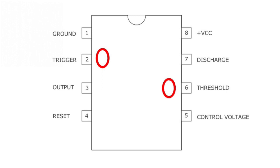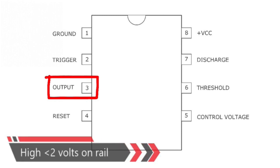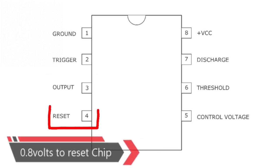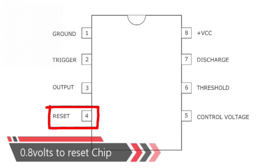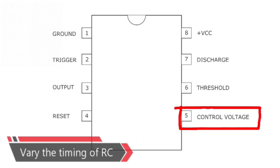Pin 3 — output — pins 3 and 7 are in phase; it goes high about 2 volts less than the rail. Pin 4 — reset — internally connected high via 100 kilo-ohms; must be taken below 0.8 volts to reset the chip. Pin 5 — control — a voltage applied to this pin will vary the timing of the RC network.